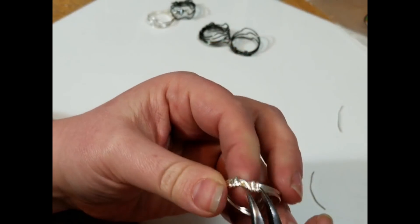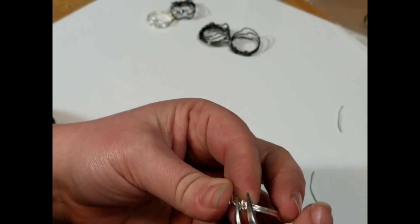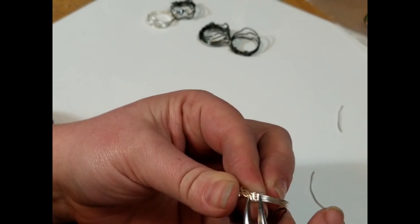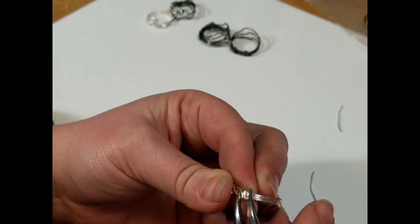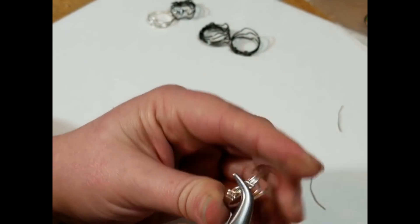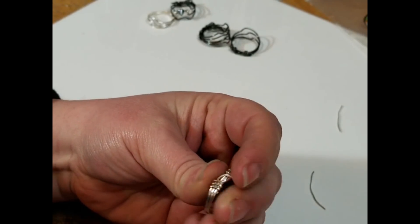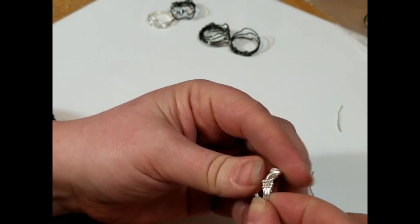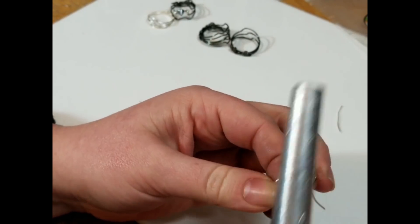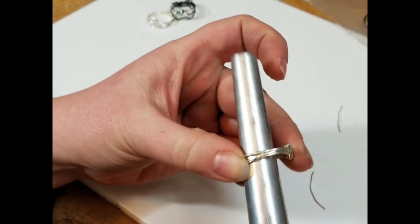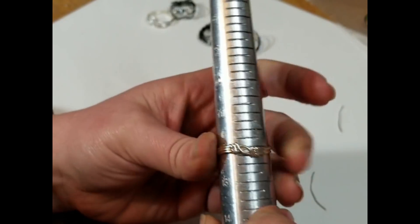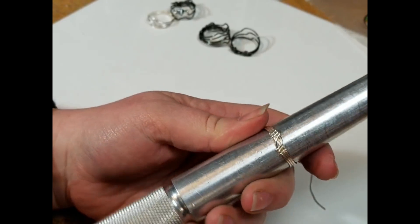Now you can also come in with your pliers and tighten this up just a little bit. And you can see they started to overlap each other just a little. So, I'm going to put this back onto my mandrel. Try to straighten everything back out. And now I'm going to hammer this side.